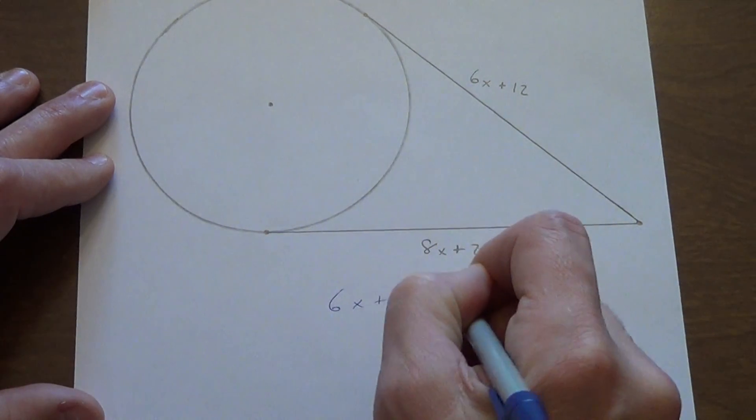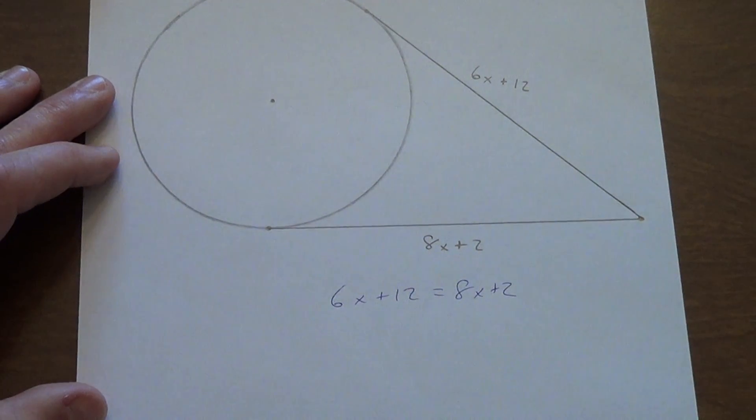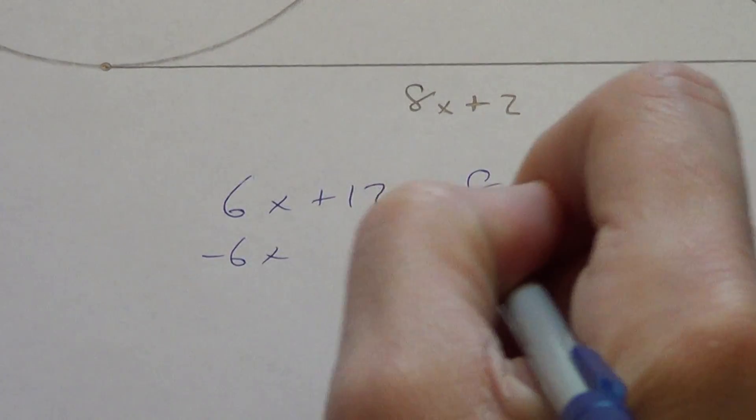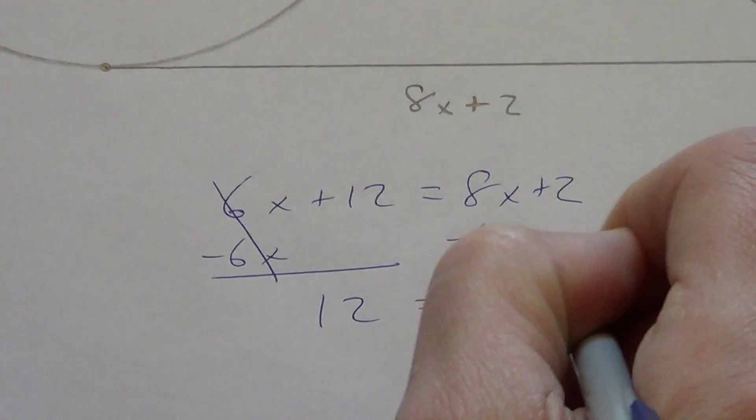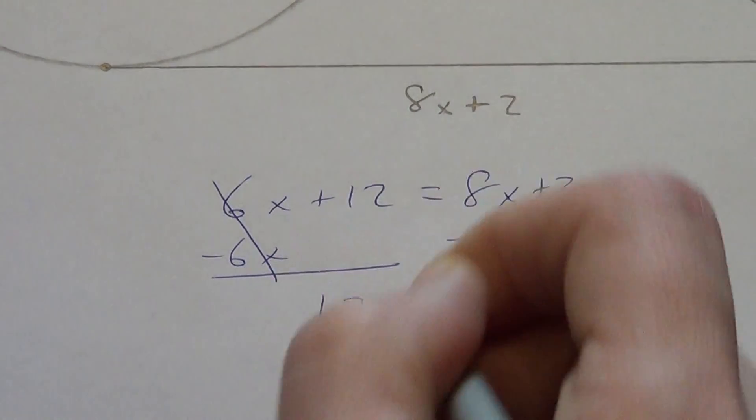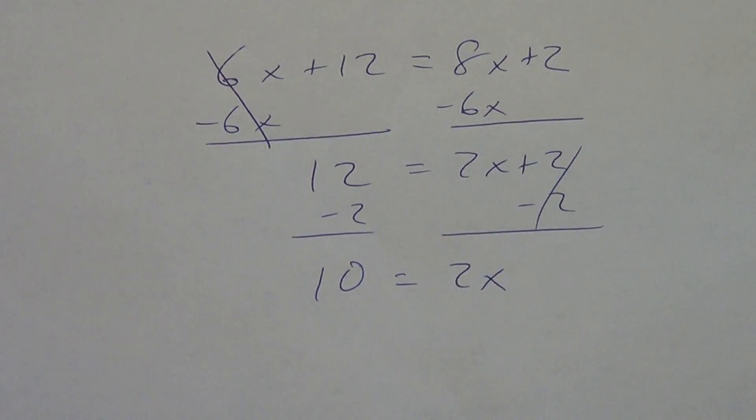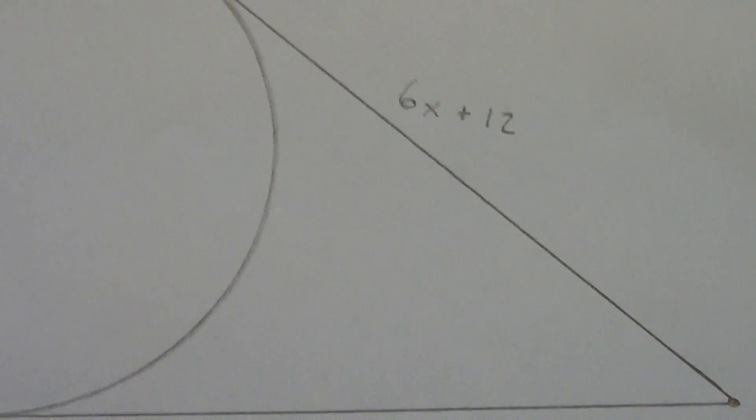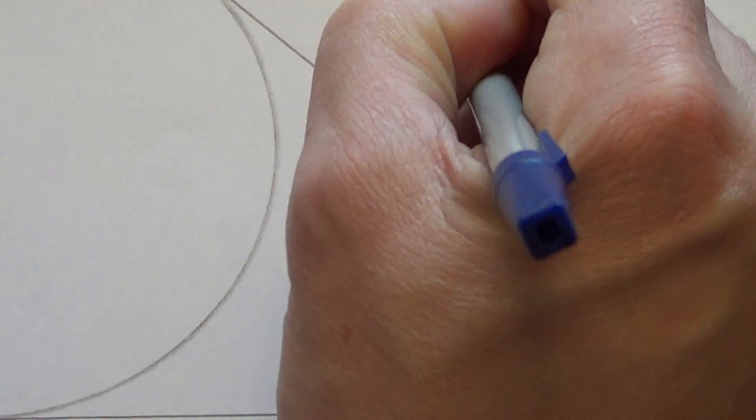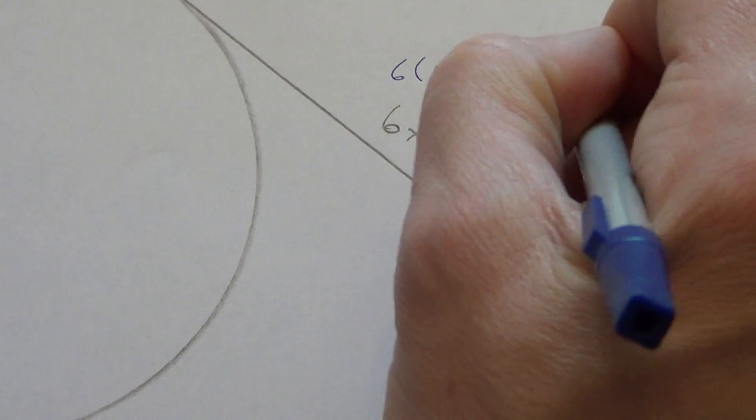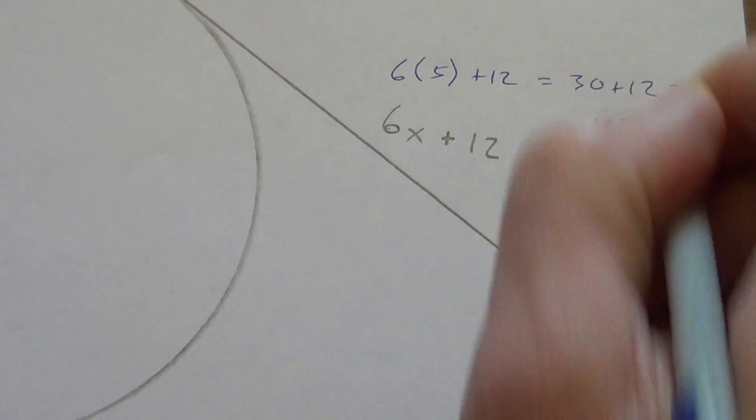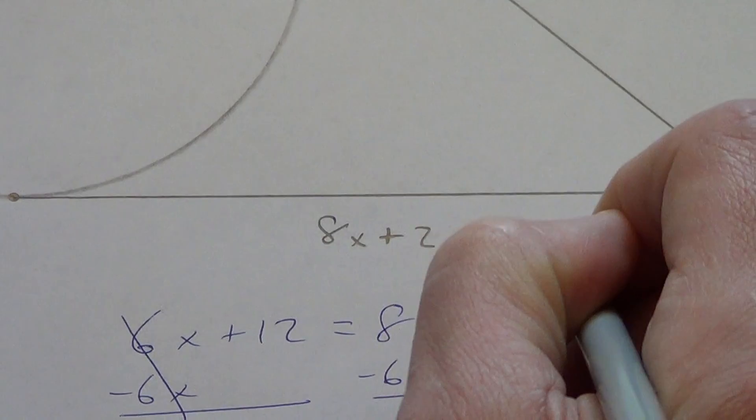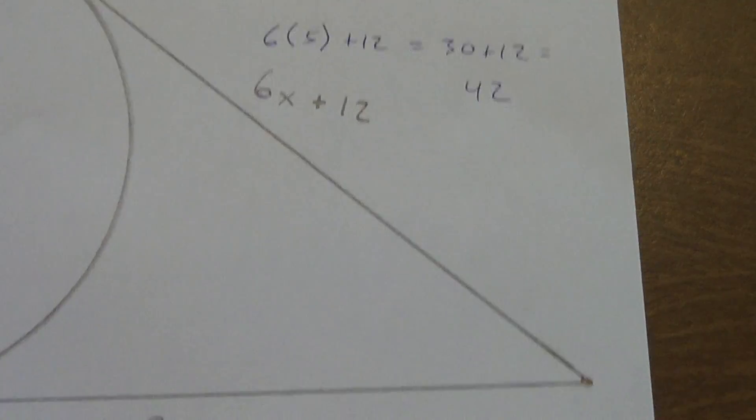So, 6x plus 12 has to equal 8x plus 2. So, what in the world do we get when we do 6x plus 12 equals 8x plus 2? We subtract the 6x from both sides. 12 equals 2x plus 2. We subtract the 2 from both sides. 10 equals 10 equals 2x. We divide by the 2. We get x equals 5. Let's check it. 6 times 5 plus 12. 6 times 5 is 30 plus 12. 30 plus 12 is 42. Let's come down here. 8 times 5 plus 2. 8 times 5 is 40. 40 plus 2 is 42. 42, 42, 42, looks like it's working.